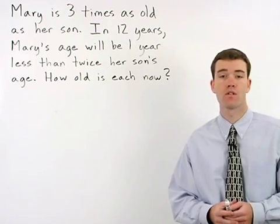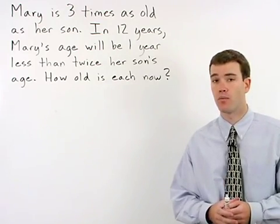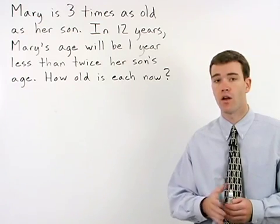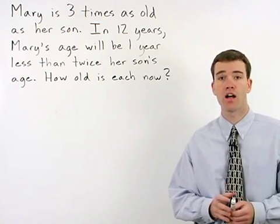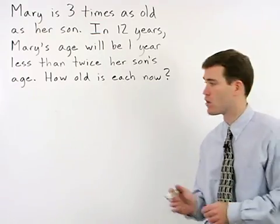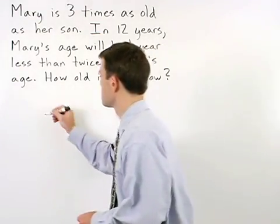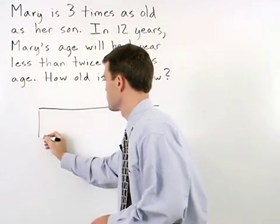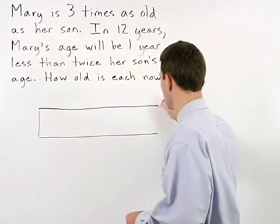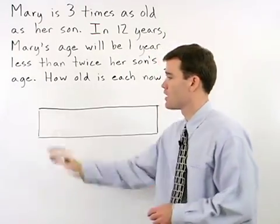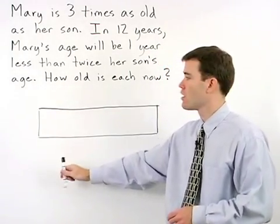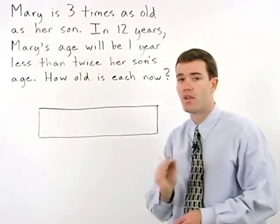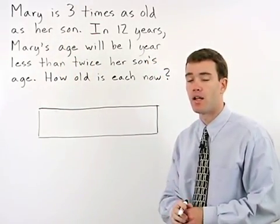For the word problems in this section called age problems, you're going to be dealing with a lot of information. So to help you organize things, it's a good idea to set up a chart. Down the left side of our chart, we're going to list our people that are involved in this problem. In this case, Mary and her son.